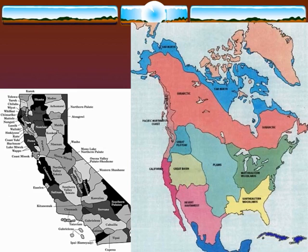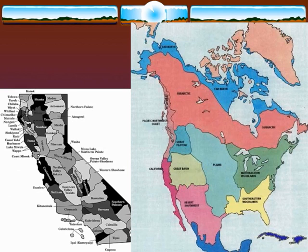First off, we have to start with a thesis statement: Native Americans contained everything we associate with civilization except an easily transmittable form of writing. A wide variety of historians have made this conclusion. The Central American tribes were probably on the cusp of that. The Inca had a very sophisticated form of writing, but it's really been lost and we just don't know how it actually worked, because it was very organic in its form.